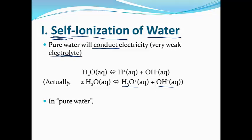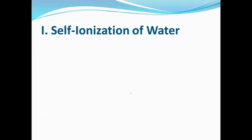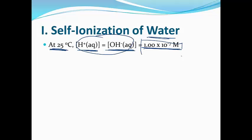In pure water, the H-plus concentration — which is actually the H3O-plus concentration — will always be equal to the OH-minus concentration. The units have to be molarity, moles per liter. This condition applies at 25 degrees Celsius. The H-plus concentration of pure water will be equal to the OH-minus concentration. If you change the temperature, the concentrations will still be equal, but the value will be different.